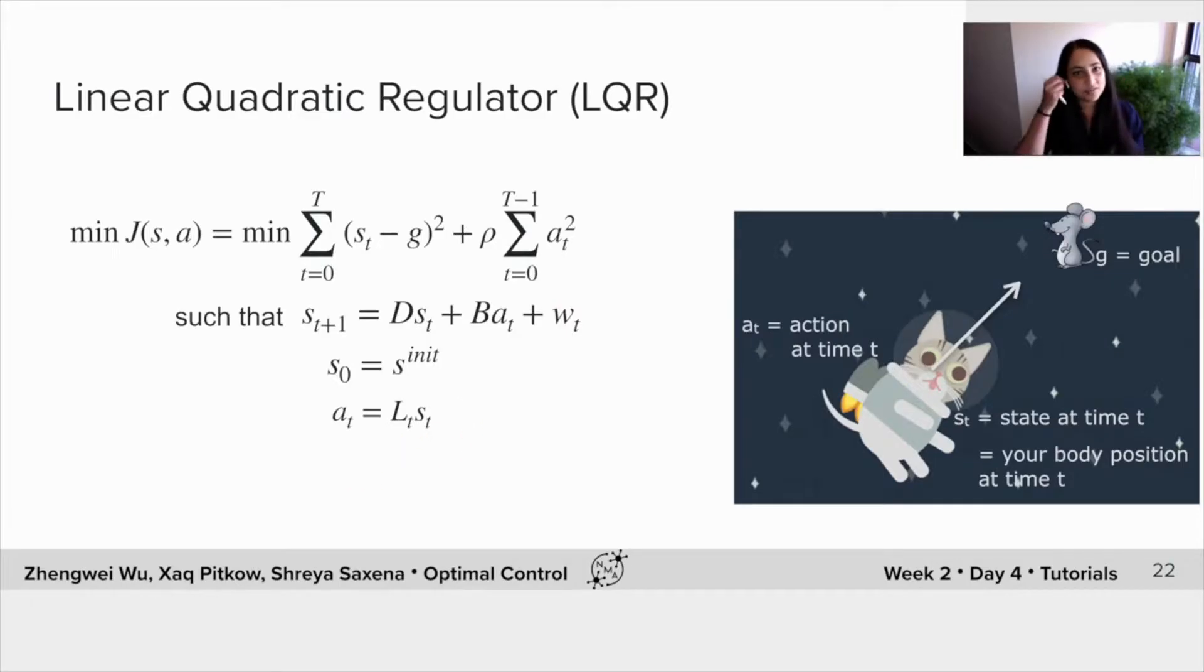So this problem in general is actually called the linear quadratic regulator or the LQR. And it may seem complicated. And here again, we want to find L(t), the control gain such that this cost function is minimized. But in fact, it has a straightforward solution and this cost function can be minimized. L(t) can be found using principles of dynamic programming.